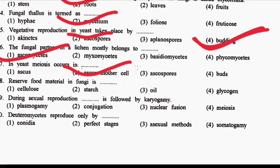Next question: the reserve food material in fungi is DASH. Option 1: Cellulose. Option 2: Starch. Option 3: Oil. Option 4: Glycogen. The correct answer is Option 4, that is Glycogen.